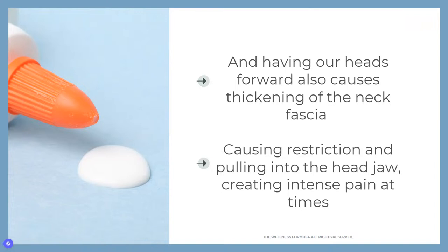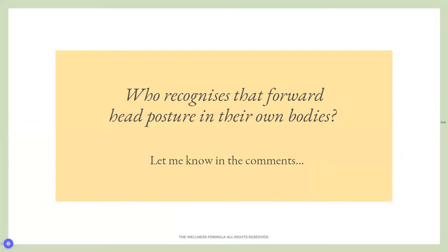That extra fascia on the neck is helpful for holding the head up, but it can cause the restrictions and pulling we spoke about with fascia — the more layers there are, the more likely there is to be immobility and restriction, which can then create that pulling through the side of the neck and down into the jaw. Let me know in the comments if you recognize that forward head posture in your own body.